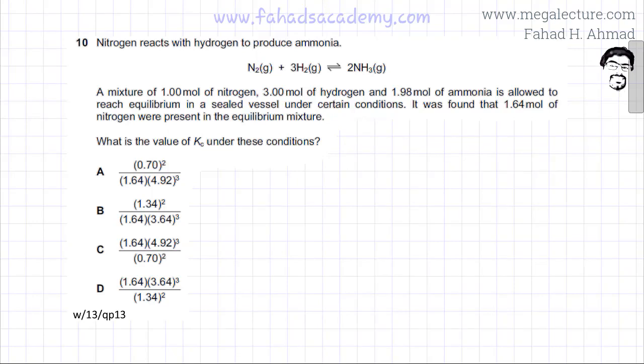The following past paper question reads that nitrogen reacts with hydrogen to produce ammonia. They've given you a reaction of the Haber process where nitrogen is reacting with hydrogen and it is producing NH3, and it's a reversible reaction. The question states that a mixture of one mole of nitrogen, three moles of hydrogen gas, and 1.98 moles of ammonia is allowed to reach equilibrium in a sealed vessel under certain conditions. So these are your initial moles.